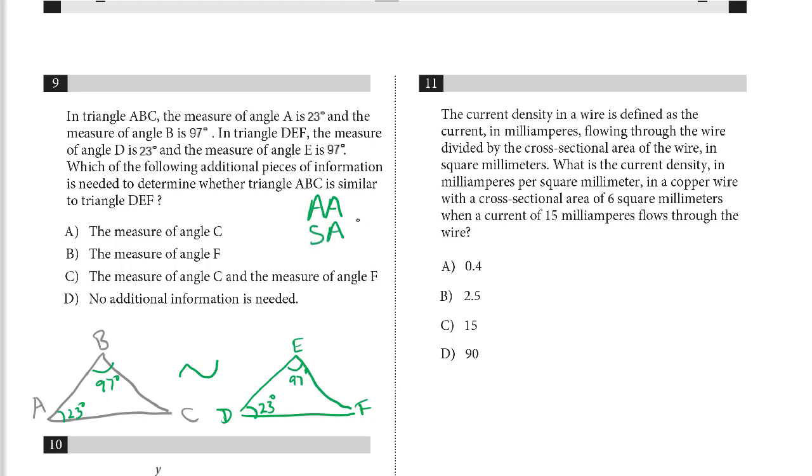Side-angle-side, side-side-side, or right triangle-hypotenuse-side. These are your methods for determining similarity. By AA methodology, these triangles must be similar. There's no additional information that's needed. D is the correct answer for 9.